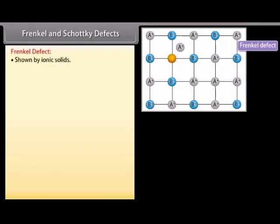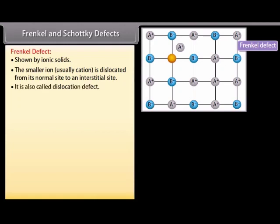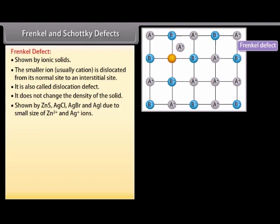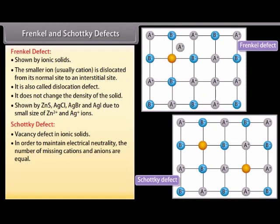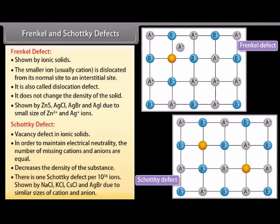Frenkel defect is shown by ionic solids. The smaller ion, usually the cation, is dislocated from its normal site to an interstitial site. It is also called a dislocation defect. It does not change the density of the solid. It is shown by ZnS, AgCl, AgBr, and AgI, due to the small size of Zn²⁺ and Ag⁺ ions. Schottky defect is a vacancy defect in ionic solids. To maintain electrical neutrality, the number of missing cations and anions are equal, which decreases the density. There is one Schottky defect per 10¹⁶ ions. It is shown by NaCl, KCl, CsCl, and AgBr, due to similar sizes of cation and anion.